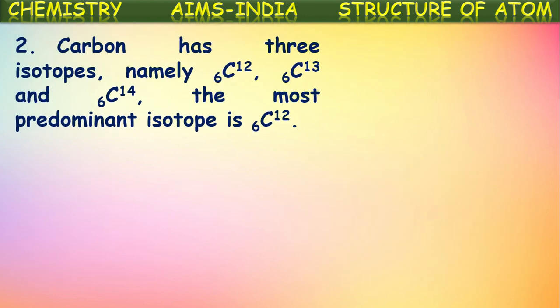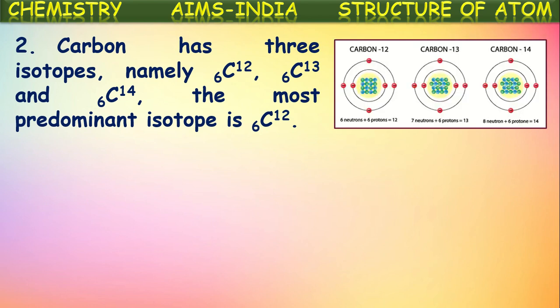Let us see some more examples. Carbon also has three isotopes: carbon-12, carbon-13, and carbon-14. The most predominant isotope is carbon-12, while carbon-13 and carbon-14 exist in rare quantities. Similarly for hydrogen, protium is the most predominant isotope, while deuterium and tritium exist in very rare quantities.